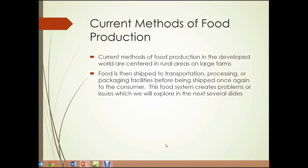First, current methods of food production. The current methods of food production in the developed world are centered in rural areas on large farms. The food produced there is then shipped to transportation, processing, or packaging facilities before being shipped once again to the consumer. This food system creates problems or issues that we'll explore in the next several slides.